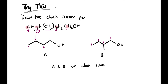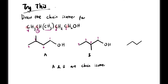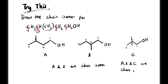If we shorten the main chain to 3 carbons and place two branches at the middle carbon instead, the total carbon count remains the same. This gives us structure C, which is also a chain isomer of A and B. When stating isomers, we need to identify at least a pair. We can state A and B, A and C, or all three — A, B, and C — as chain isomers. Stating all three together is fine.